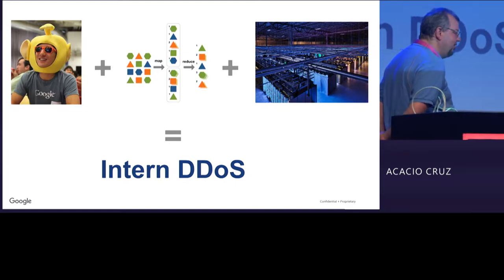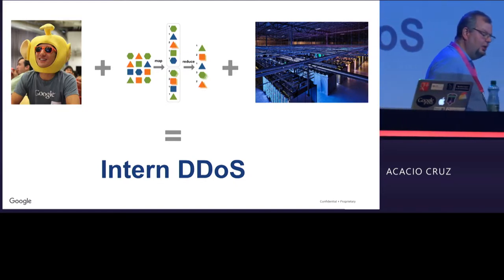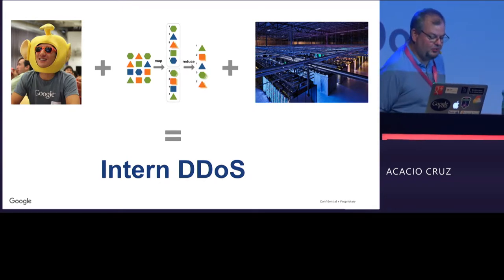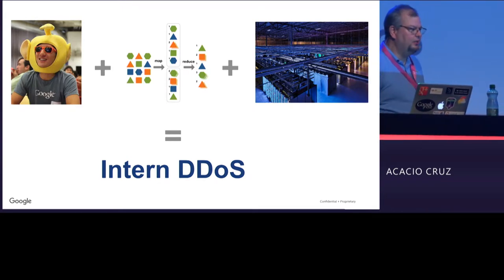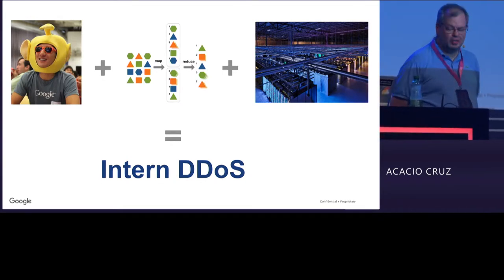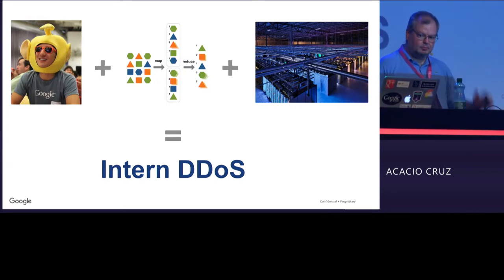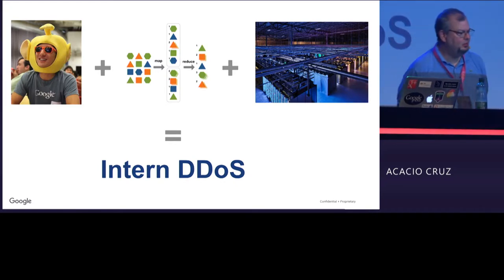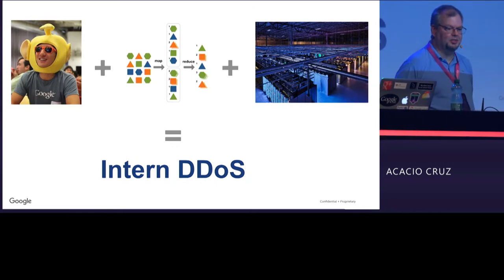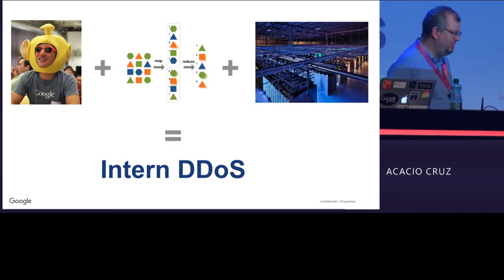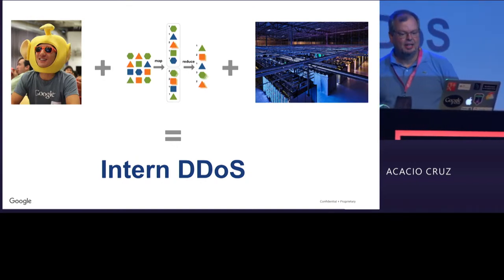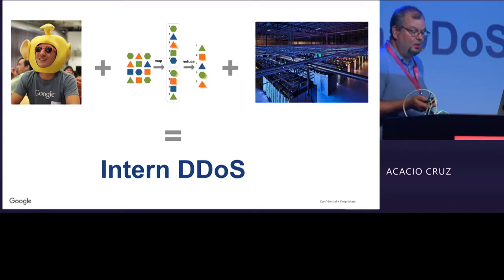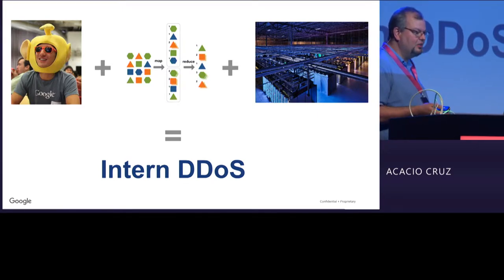For example, we had an intern asked to do load testing on Gmail. We have a nice command-line tool and you specify 15,000 requests per second. He just ran that from his workstation — what harm could be done? The problem is we're Google, and our units are not ones, they're thousands. So he was actually running a 15-million-request load testing event. That had unintended consequences. This is actually a pattern that happened quite a few times, but it's a generalization of broader things.